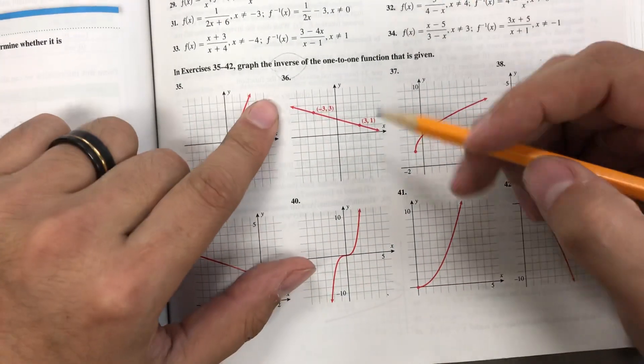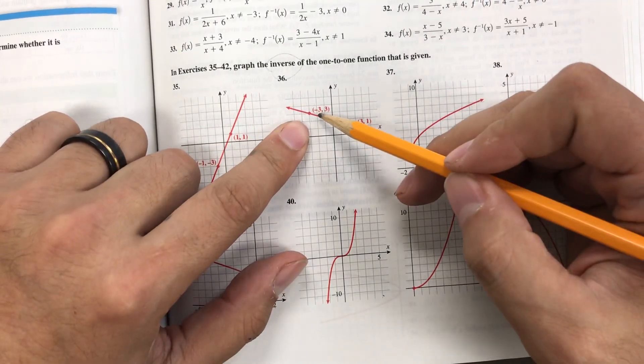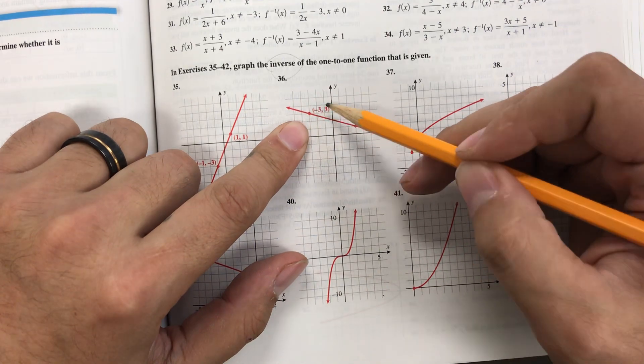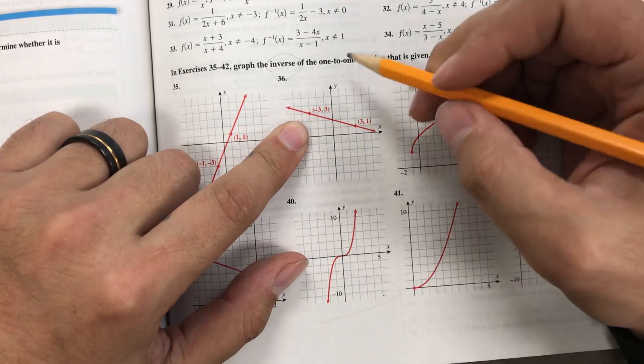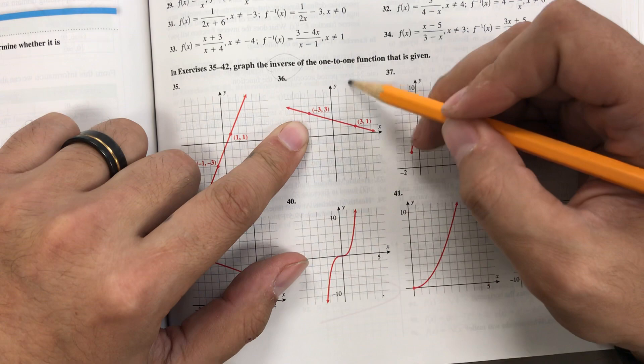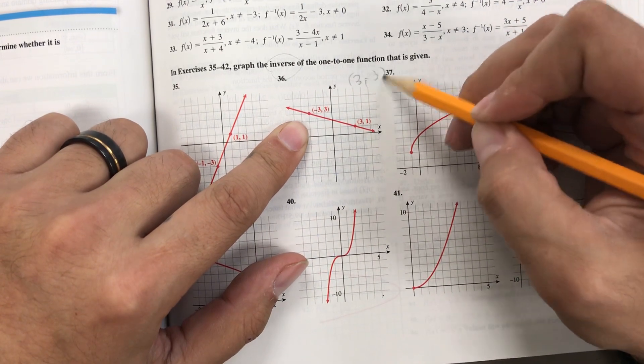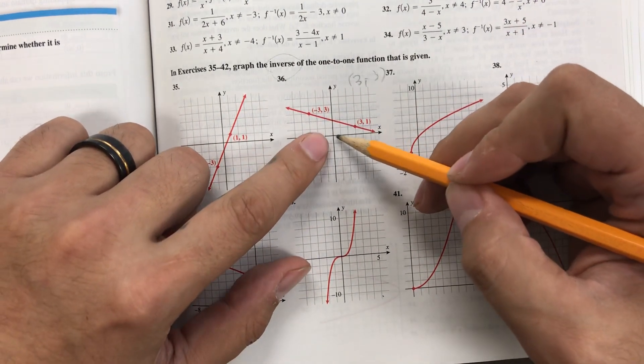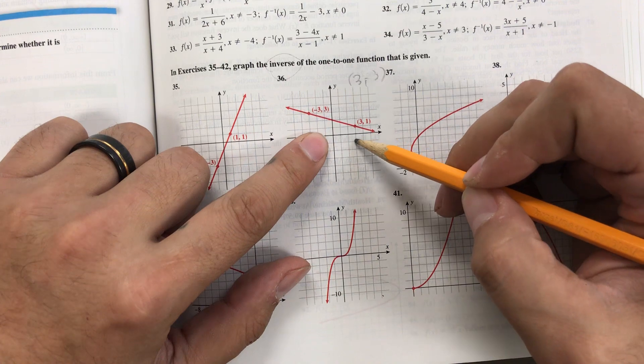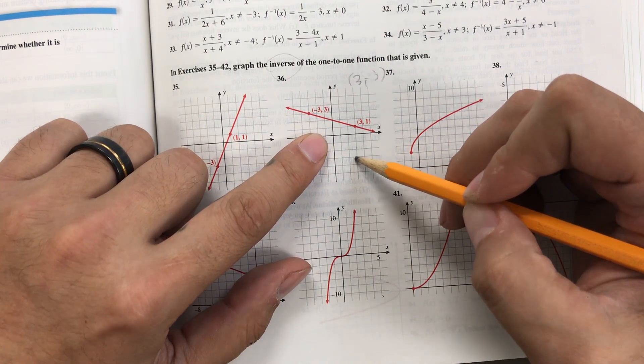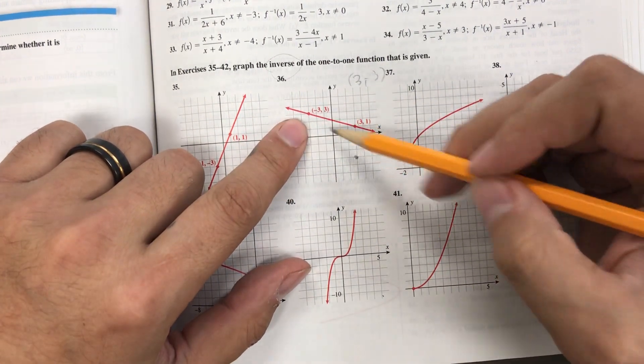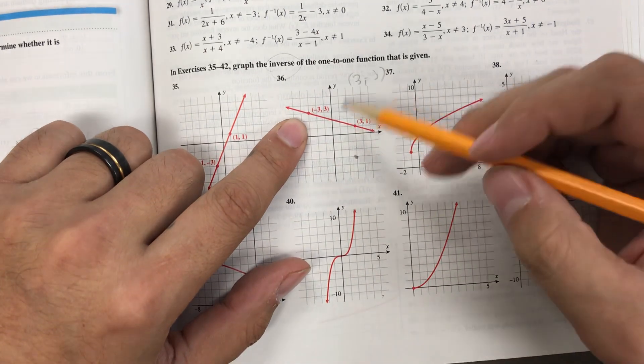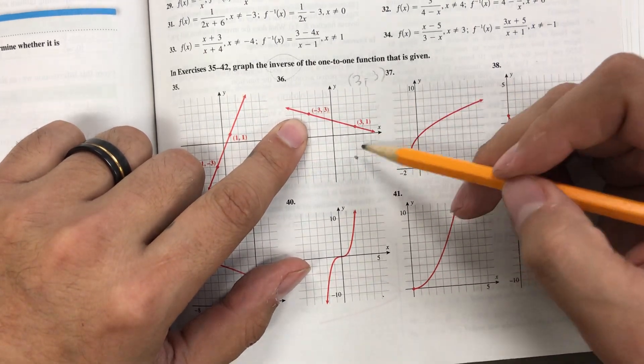So check it out. For number 36, if I've got one coordinate, negative 3, 3, on the function, then that means for the inverse, I'm going to reverse it. So it'll be 3, negative 3. And I graph that coordinate. So I go over 3, 1, 2, 3, and then down 3, 1, 2, 3. There's the same coordinate reflected over the y-axis. I'm sorry, not y-axis, but over the line y equals x.